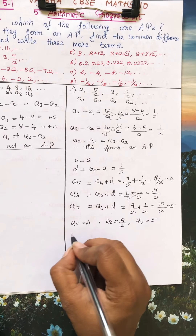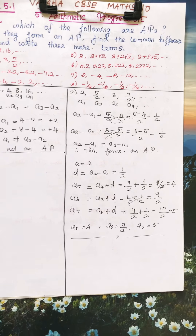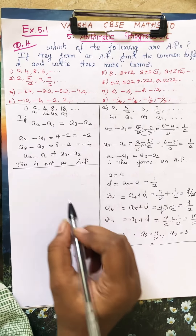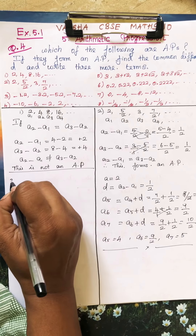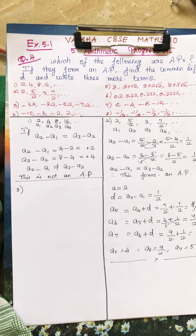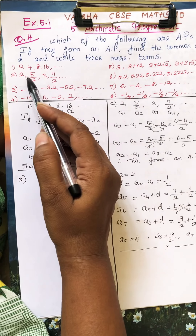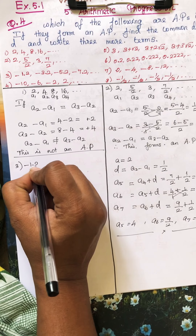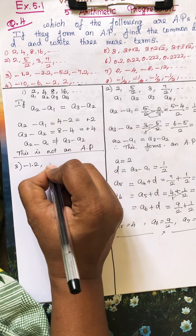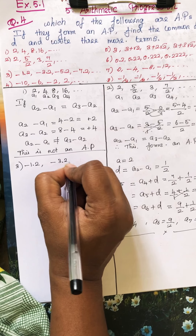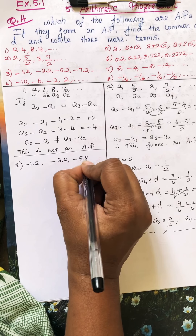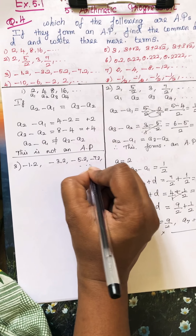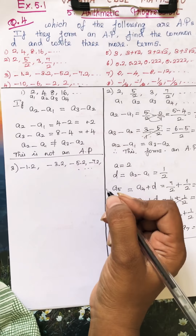So A5 equals 4, A6 equals 9/2, and A7 equals 5. These are the next 3 terms. Now going to the third sum: the sequence is minus 1.2, minus 3.2, minus 5.2, and minus 7.2, and so on.